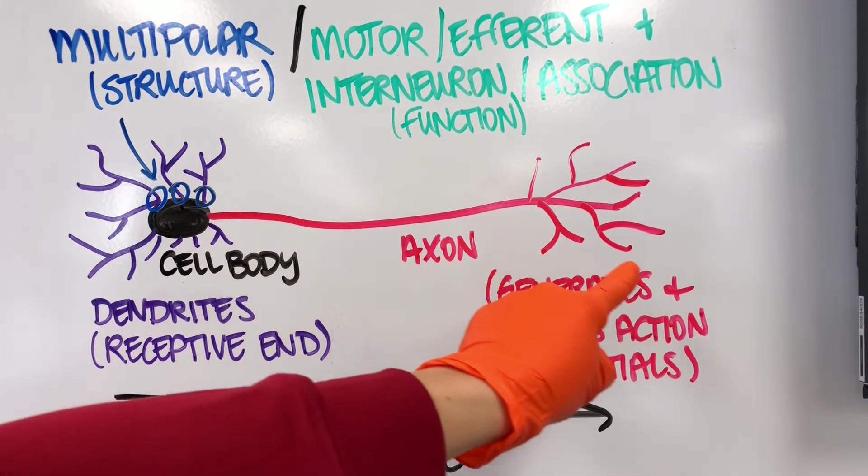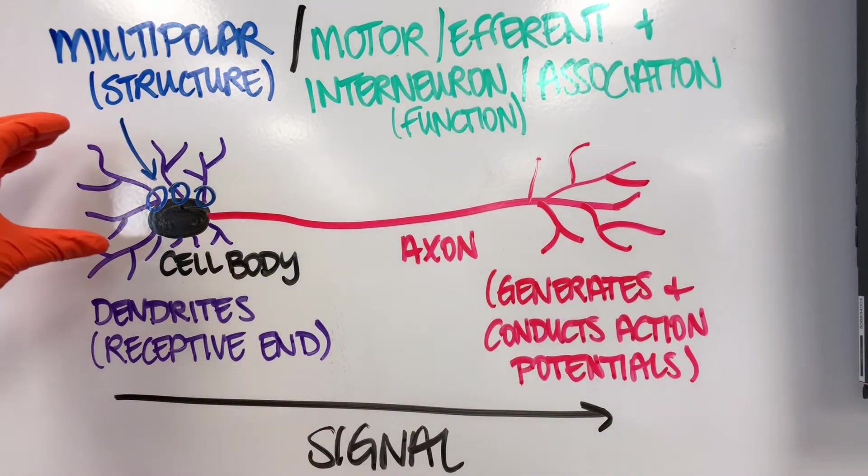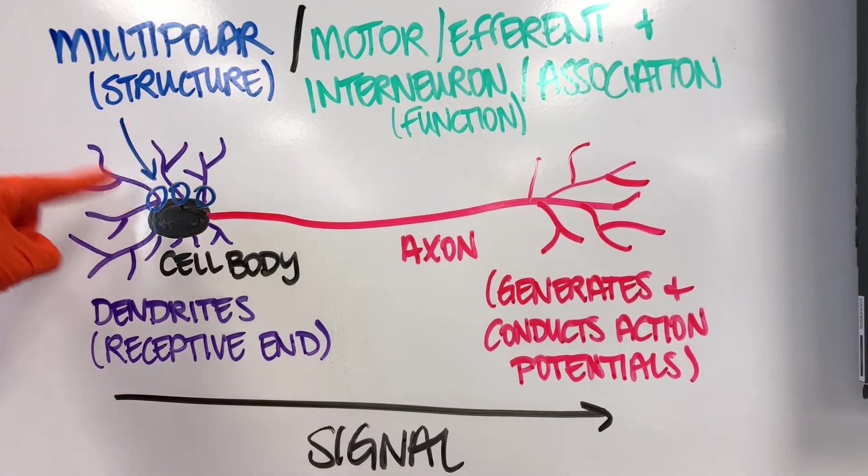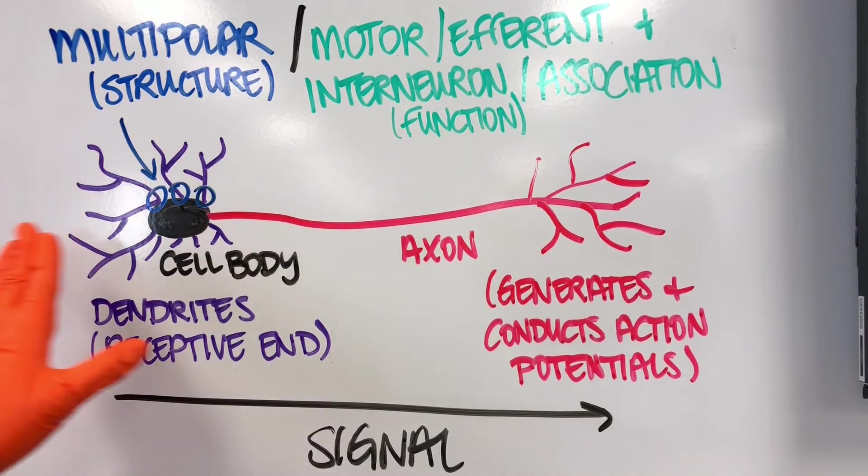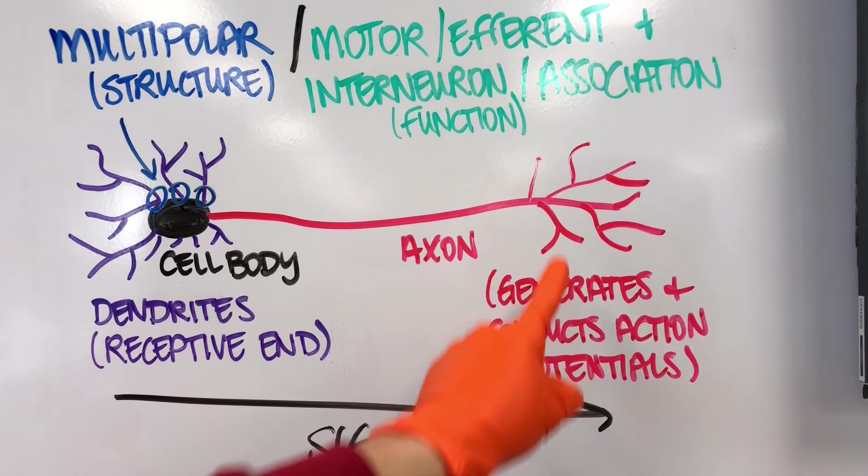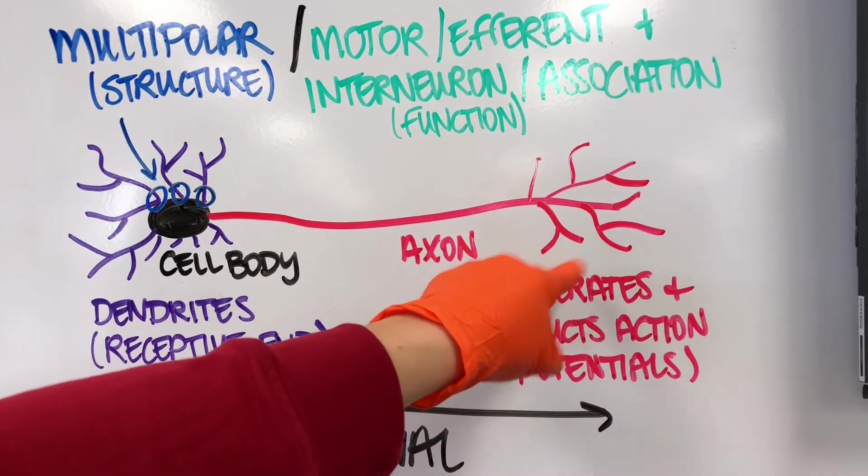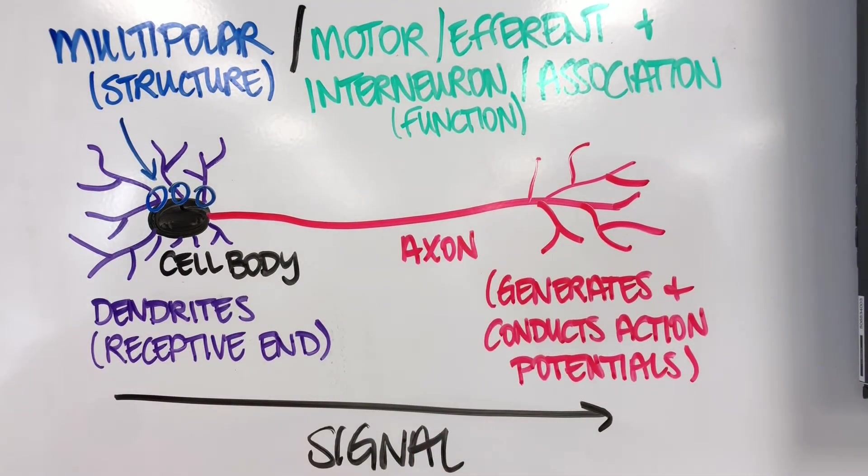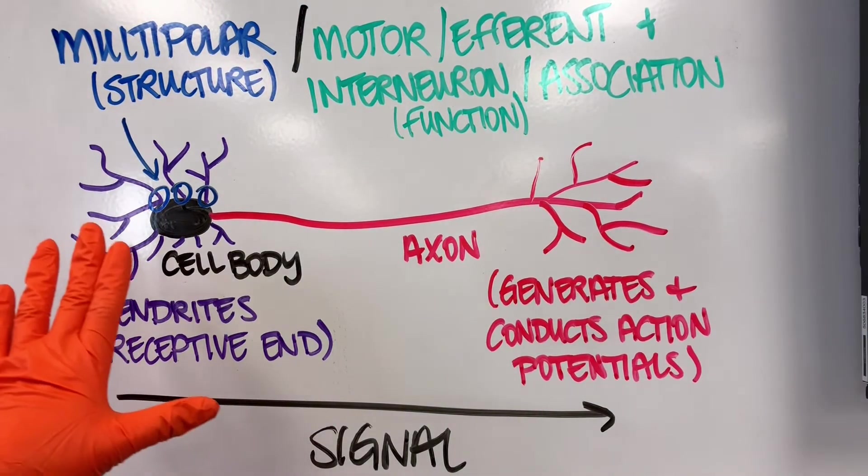Off of that cell body will have a long axon; again, the dendrites. This is where the neuron will receive signals, then it will get transmitted along the axon, and we will generate and conduct action potentials at this end right here.